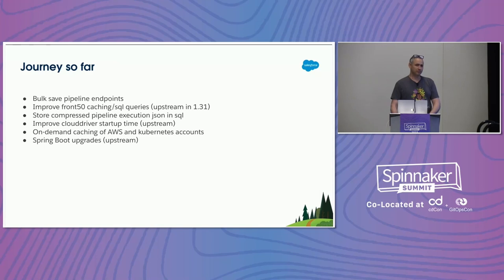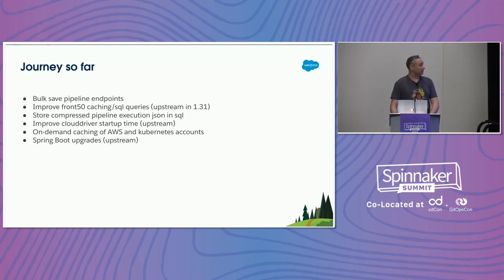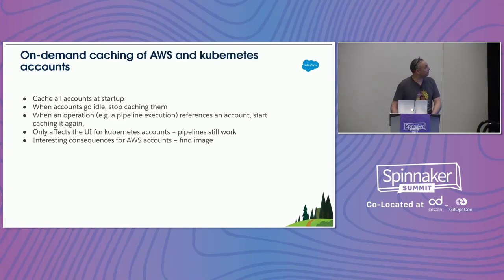Most of the place it seems like Spinnaker spends its computing power is by poking around at accounts and caching information there — to display it in the UI or to operate on it in pipeline stages. Basically every time somebody adds a new account to Spinnaker, you're spending money, and even if they never use that account it's still spending money. We got tired of that, and this is what the on-demand thing is.